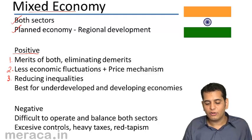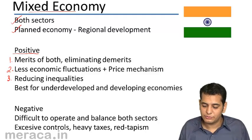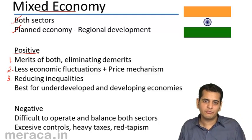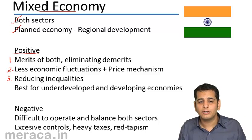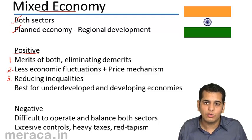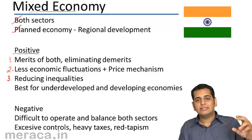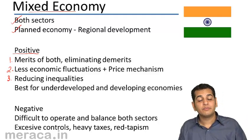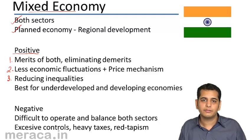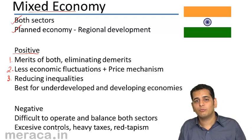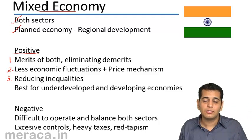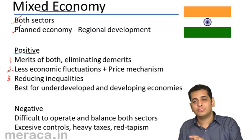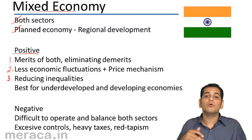The second positive is less economic fluctuations and price mechanism. In a planned economy, you have fewer economic fluctuations — in terms of inflation, currency volatility, and development. In a capitalist economy, fluctuations are more. But in a mixed economy, individuals cannot set whatever price they want beyond a certain level — they are governed by the government. This leads to more stability in the economy.